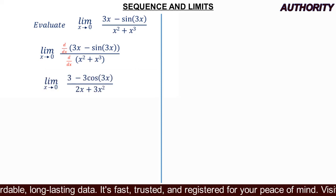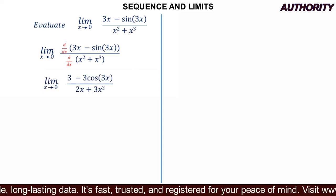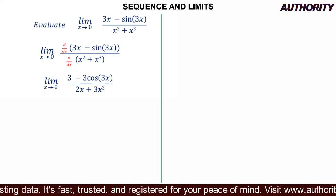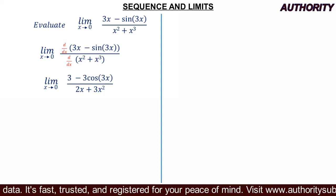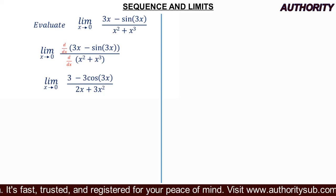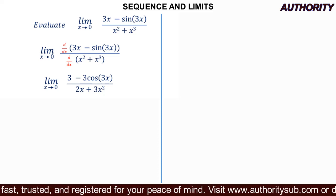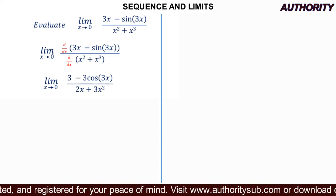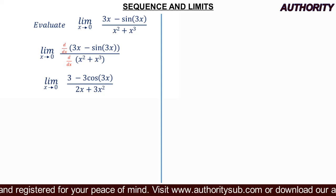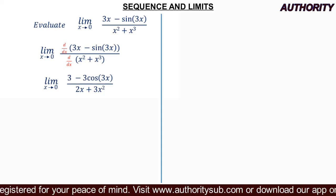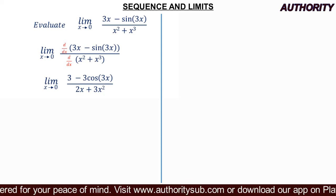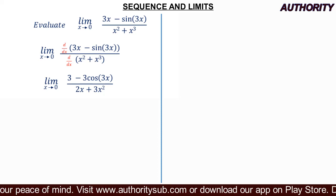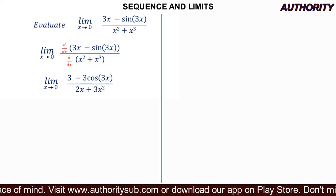Differentiating the numerator: the derivative of 3x is 3, and the derivative of minus sine 3x is minus 3 cos 3x, giving us 3 minus 3 cos 3x. For the denominator: the derivative of x squared is 2x, and the derivative of x cubed is 3x squared.